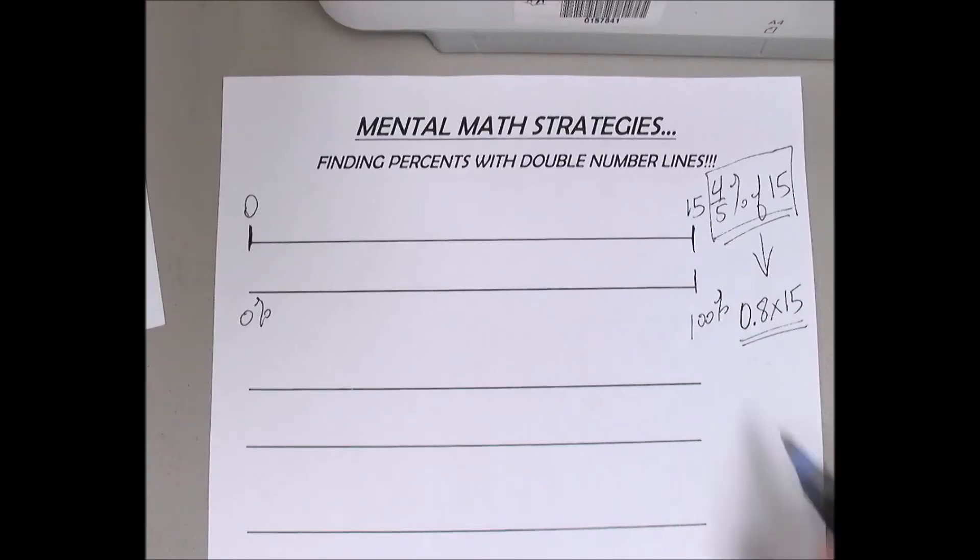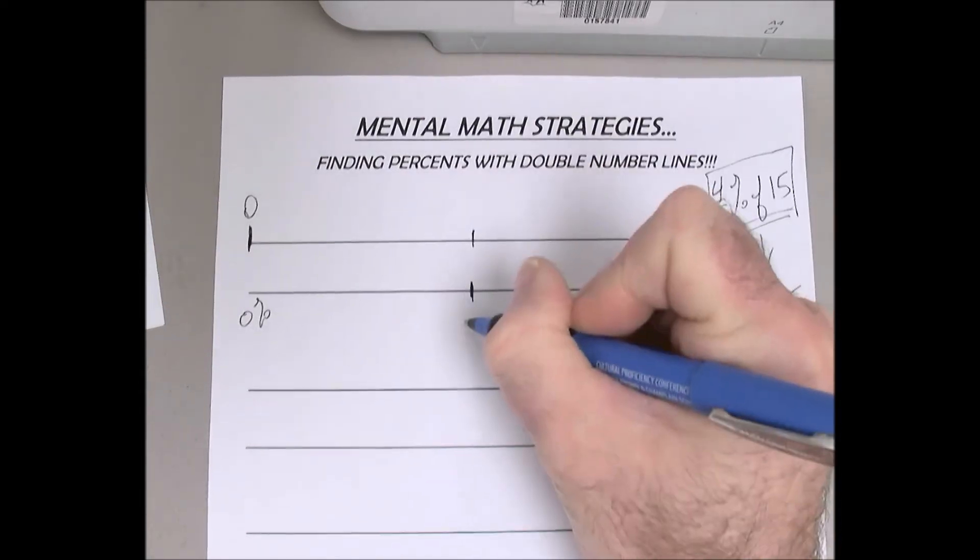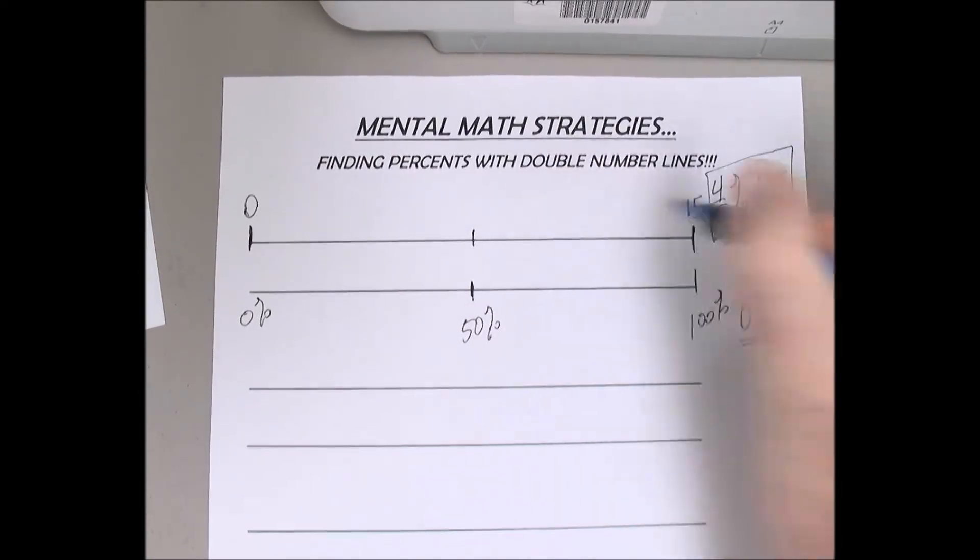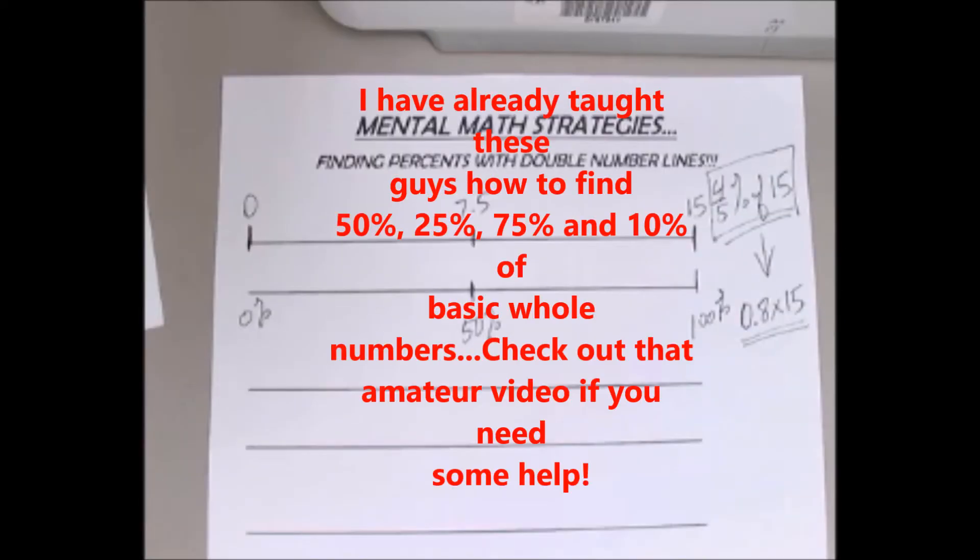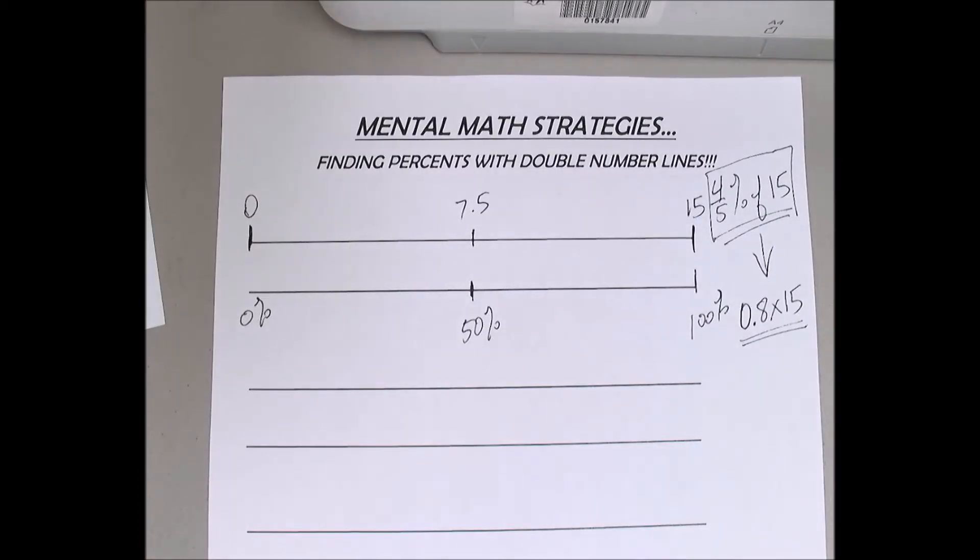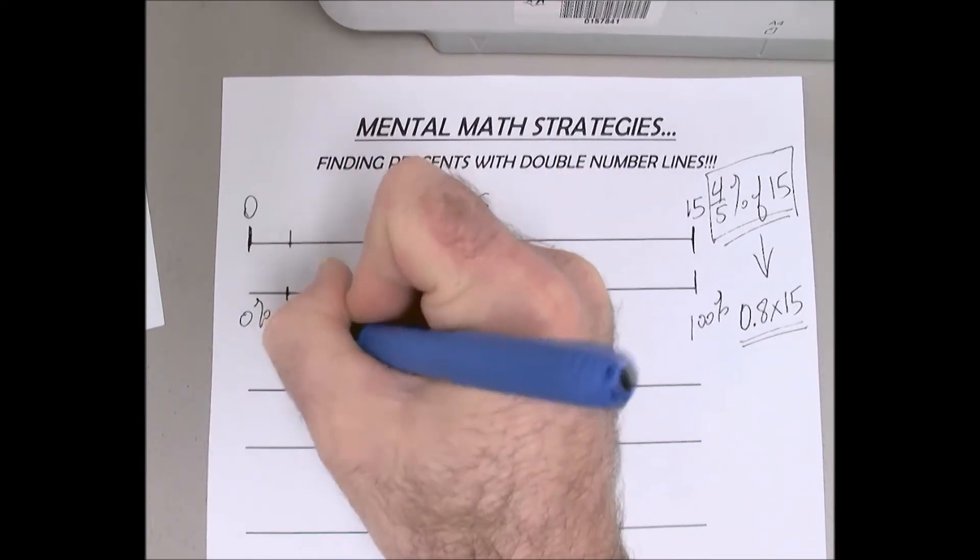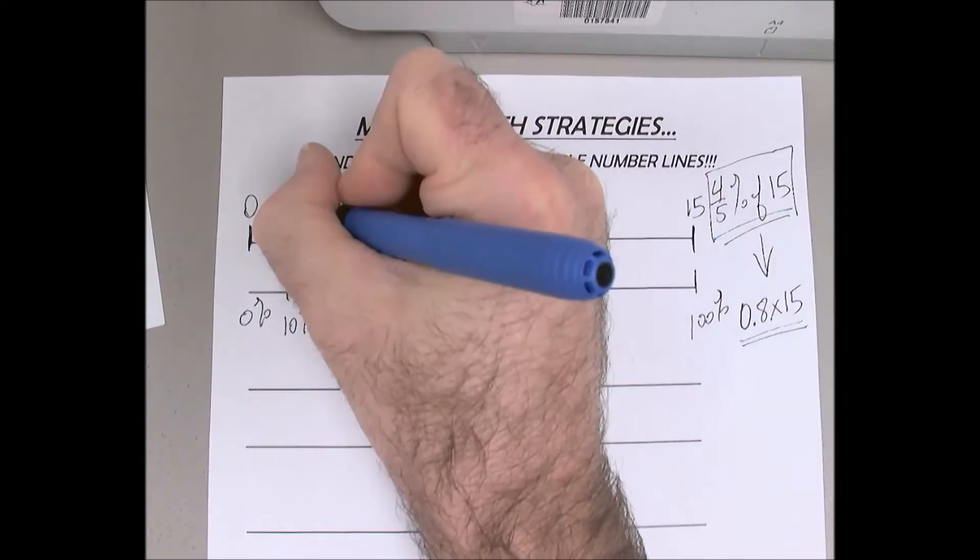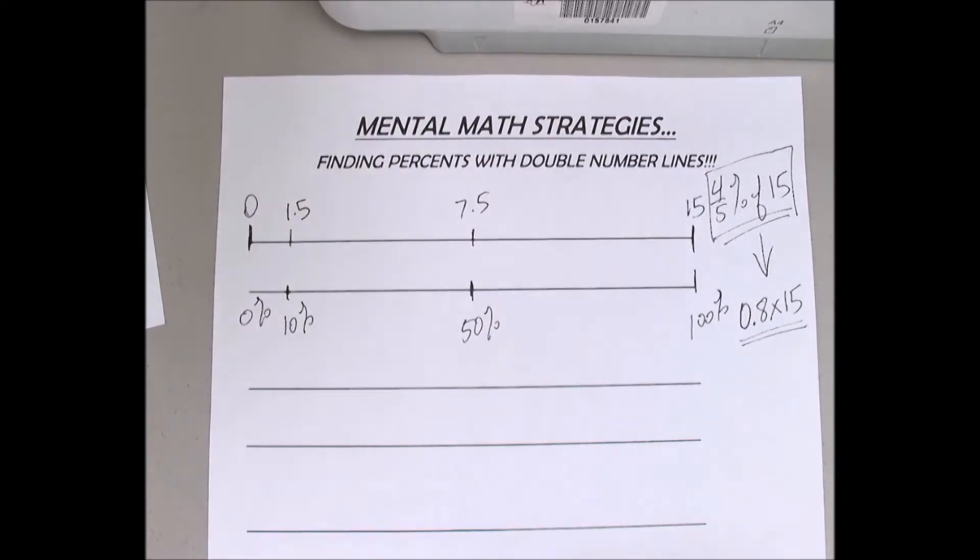So how about if we look for a relationship to 80 percent with that. Let's put in our benchmarks. Fifty percent of 15 is seven point five. Ten percent of 15, what's that going to be? One point five. Good. One point five or one and five tenths.